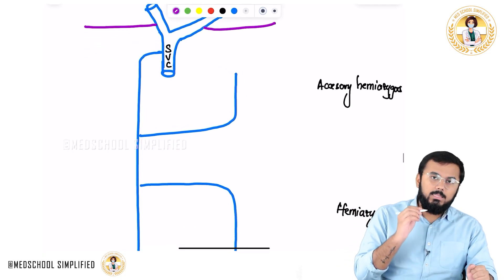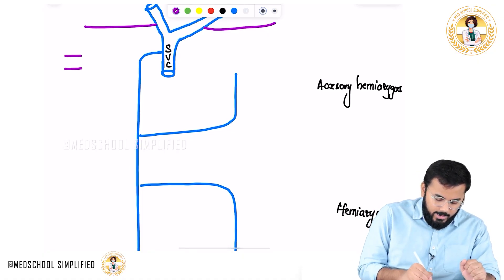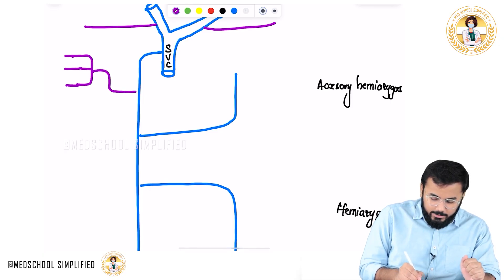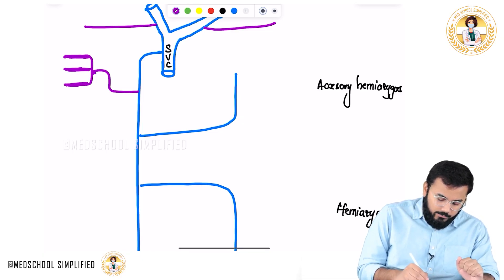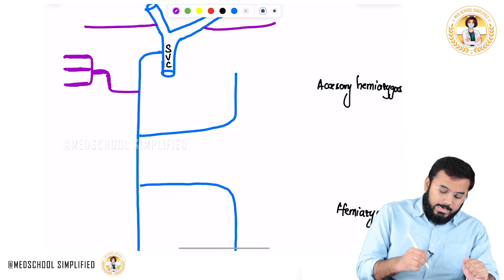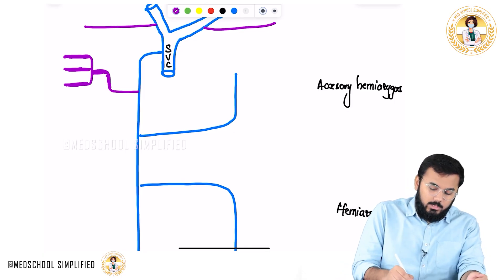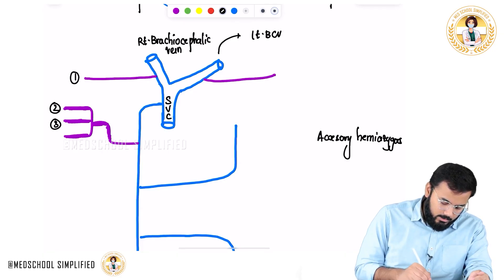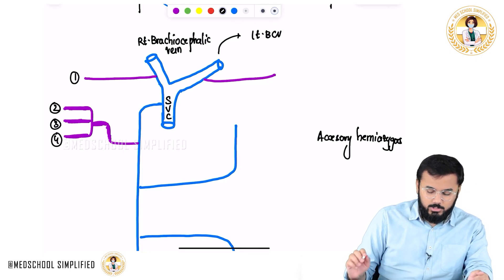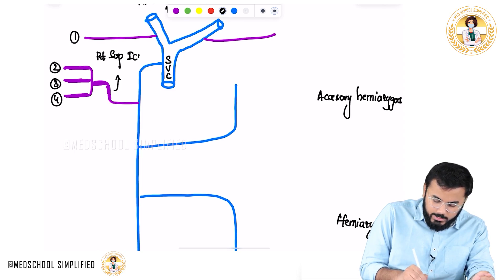After that, the second, third, and fourth posterior intercostal veins on the right side — these three together commonly drain, but they first form one vein called the right superior intercostal vein. So the second, third, and fourth on the right side form the right superior intercostal vein, which then drains into the azygous vein.